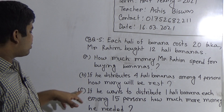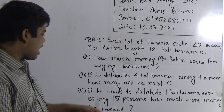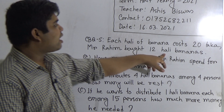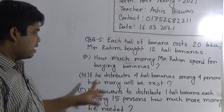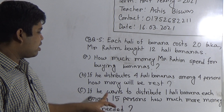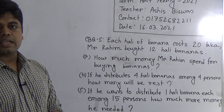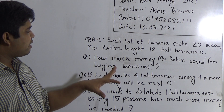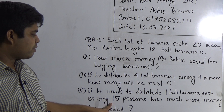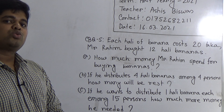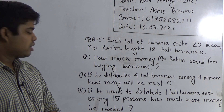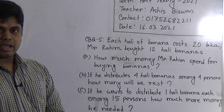Question C: If he wants to distribute 1 hali banana among 15 persons, how much more money does he need? Notice: he bought 12 hali bananas. The condition is he wants to distribute 1 hali banana among 15 persons. In order to distribute to 15 persons, he needs 15 hali bananas. We already found the total price of 12 hali bananas in question A. So here we find the price of 15 hali bananas, then subtract the price of 12 hali bananas to get the extra amount needed.